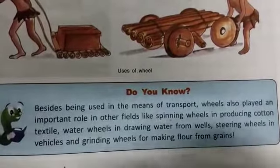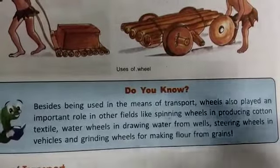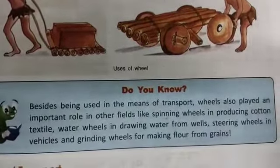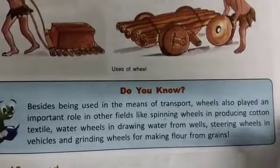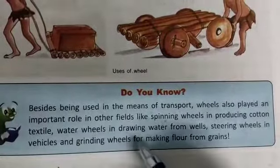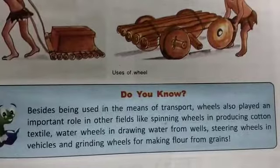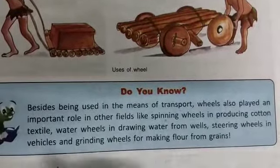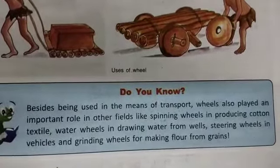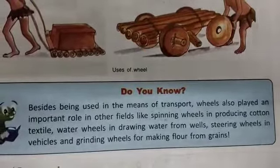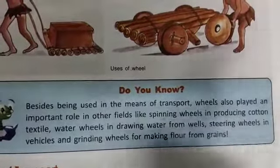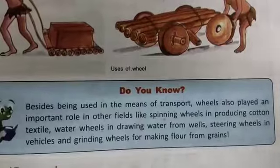Spinning wheels produced cotton textiles. Water wheels were used to draw water from wells. Steering wheels are used in vehicles. Grinding wheels are used for making flour from grains — the grain is ground into flour, which we also call aata.